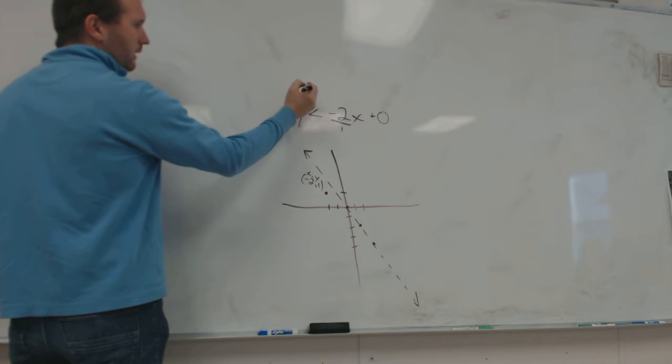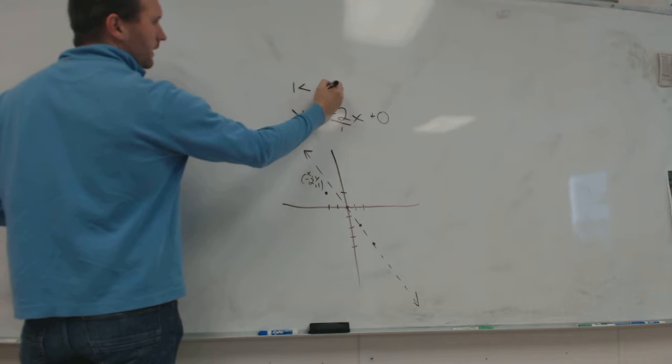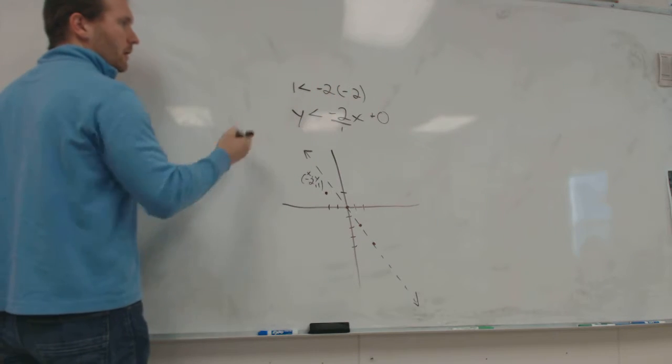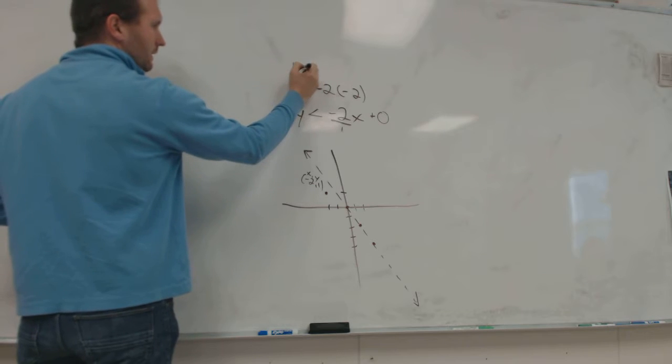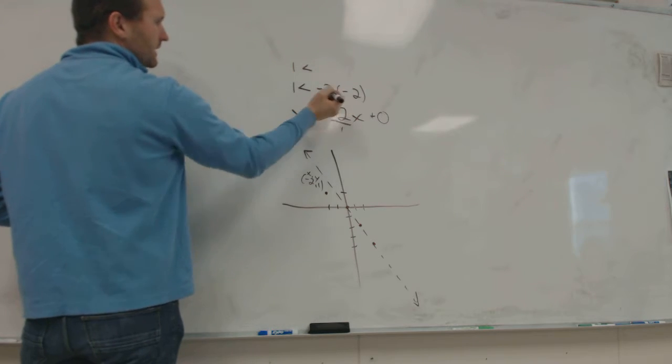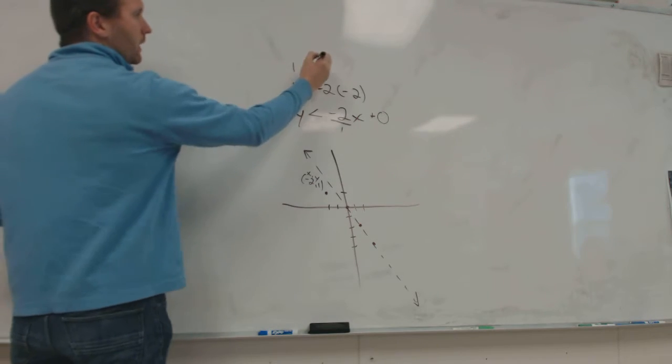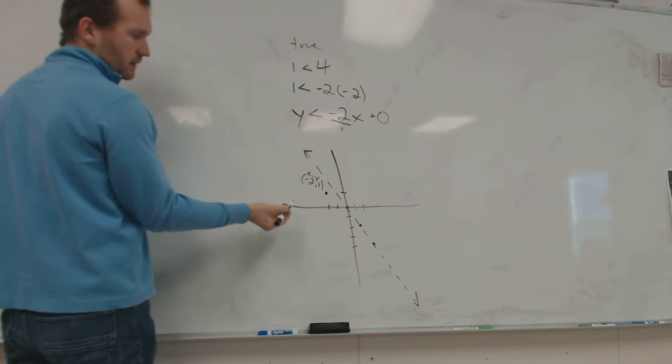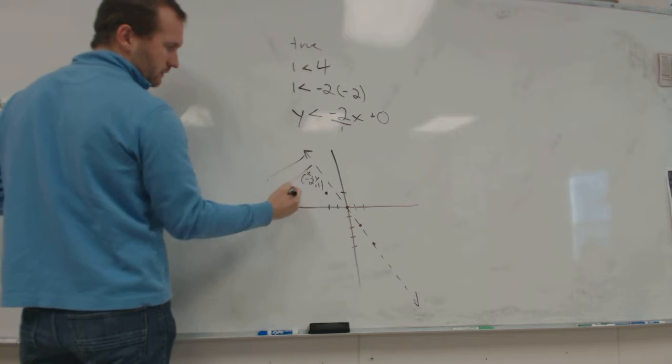Instead of y, I'm going to write 1 is less than negative 2 times negative 2. Is this true? Is 1 less than... A negative times a negative is a positive. Positive 4. Is this true? Yes. True. So I'm going to shade towards Luca's point that he chose. There we go. And then we're done.